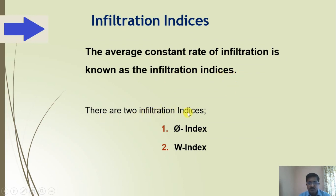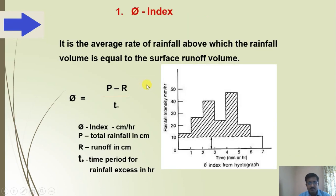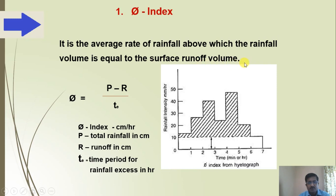The phi index: the hydrograph is plotted with time in minutes or hours on the x-axis and rainfall intensity in mm per hour on the y-axis. The phi index is the average rate of rainfall above which the rainfall volume is equal to the surface runoff volume. The formula is: phi = (P − R) / te, where phi is in centimeter per hour, P is total rainfall in centimeter, R is runoff in centimeter, and te is the time period for rainfall excess in hours.